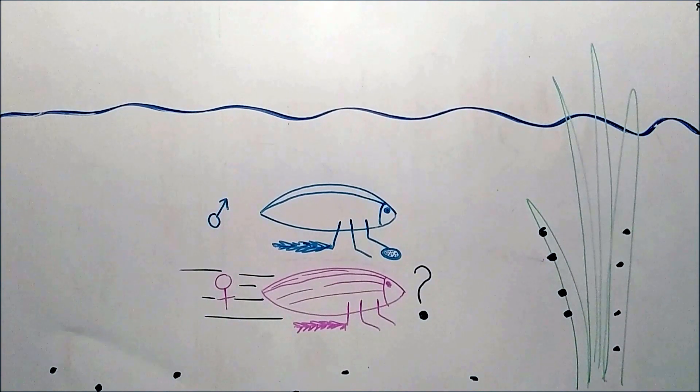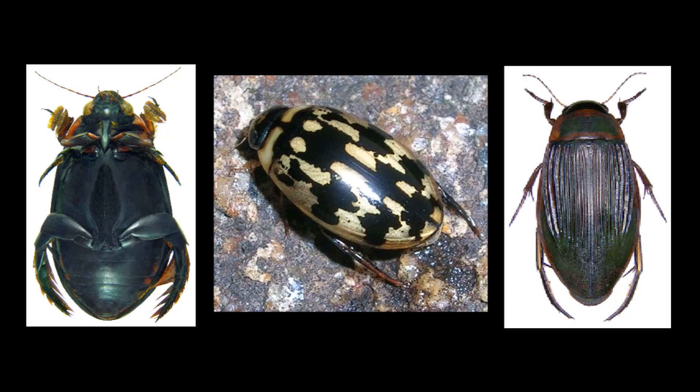What hatches from the egg is a larva, also known as a water tiger, and those are for another time. Here are a couple pictures of what diving beetles look like in real life.